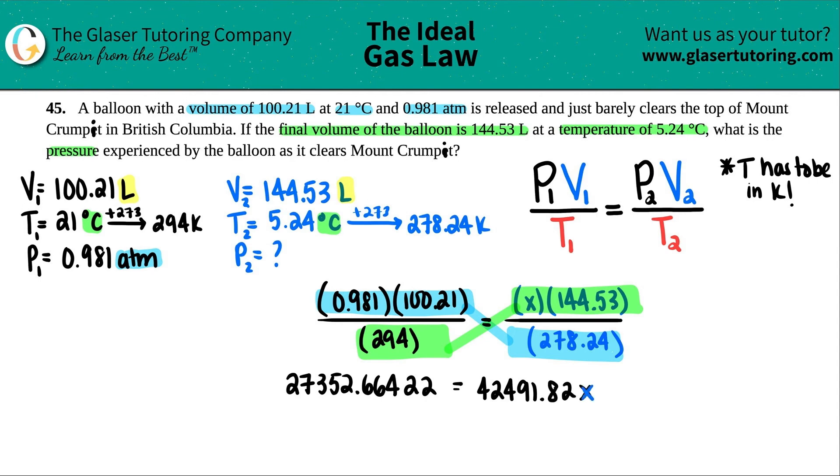If we want to solve for X, you know what we got to do - I just divide by that number on both sides. So 42491.82, and then this will cancel. We get X equals, and then we got our final answer. So this divided by this. And now I'm looking back, I see that I have like three sig figs.